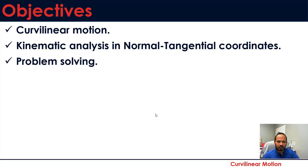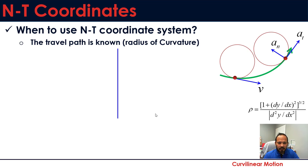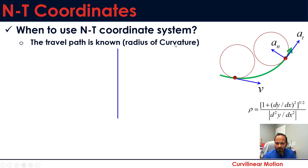When should you use the normal-tangential coordinate system for curvilinear motion? The travel path has to be known. In most cases, when the travel path is known or the radius of curvature is given, you're more likely to use the NT system. For example, if the path equation is given as y = 2.4x², you can find the radius of curvature and then apply NT coordinates.